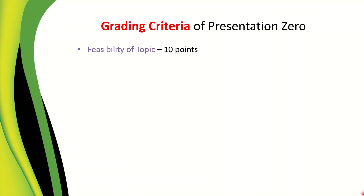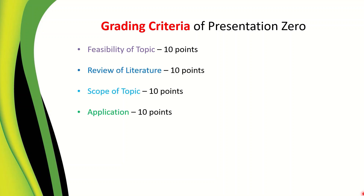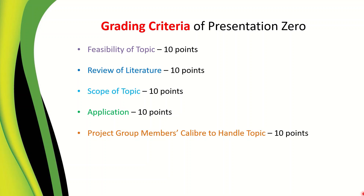In the grading criteria, 10 points is given for feasibility of the topic — that is, a judgment on whether the topic you have chosen can be successfully completed in the next two semesters with the resources at hand. For review of literature, scope of the topic, and application, 10 points each are given. Lastly, 10 points are allotted to project group members' caliber to handle the topic. Sometimes academically weaker students choose extremely difficult technical topics they may not be able to complete in two semesters — so be judicious and choose a topic you and your group can realistically finish.